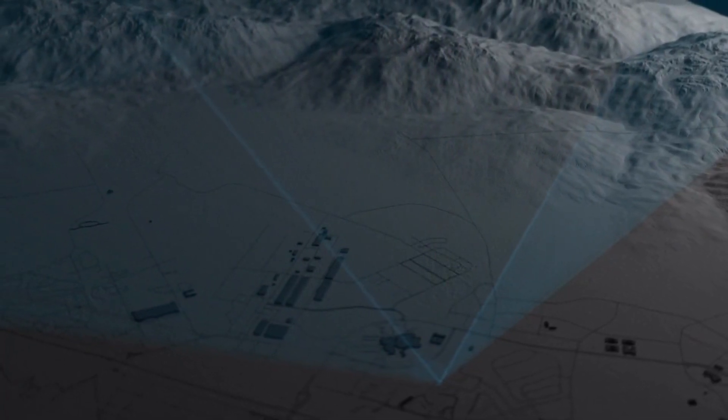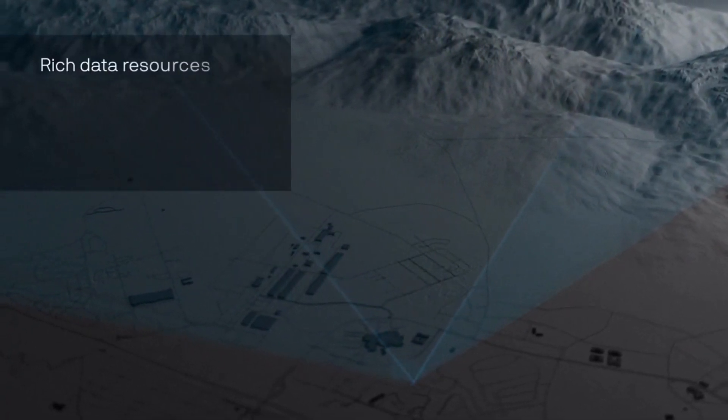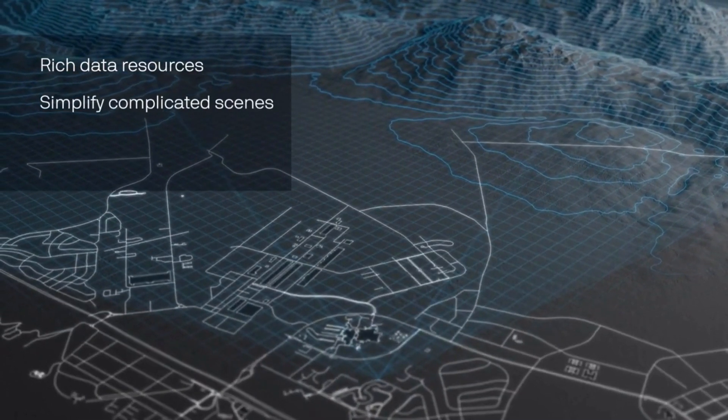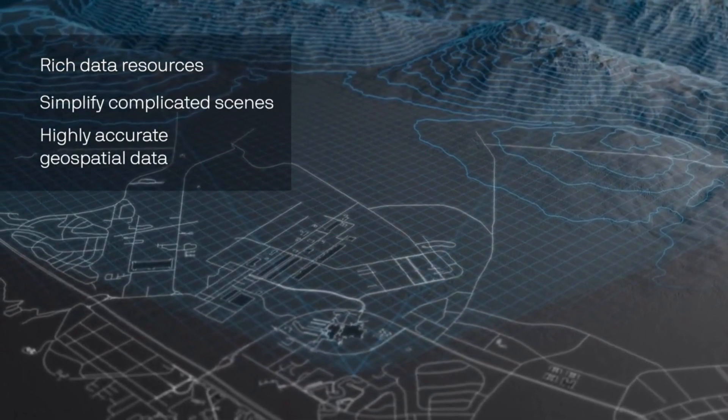Echoshield simplifies complicated scenes, suppresses ground clutter, and prioritizes object tracking based on digital terrain maps, highway and arterial street maps, and other data sources.